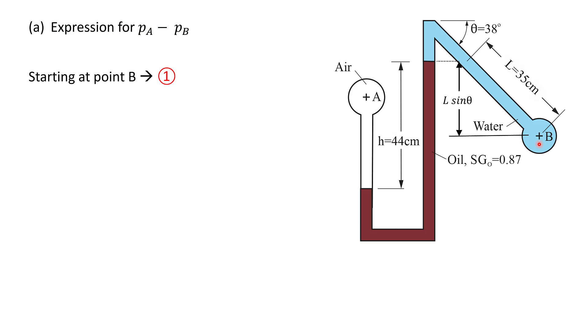For the first part of this problem, I'm going to start my analysis at point B. Of course you could start at point A if you wanted to, but starting at point B, I want to move upwards in this water layer to point one. Note that the change in depth of the water is the vertical component of l, so the change in height is l sine theta. So the pressure at one is lower than the pressure at B by the specific weight of water times l sine theta. So this is equal to p1.